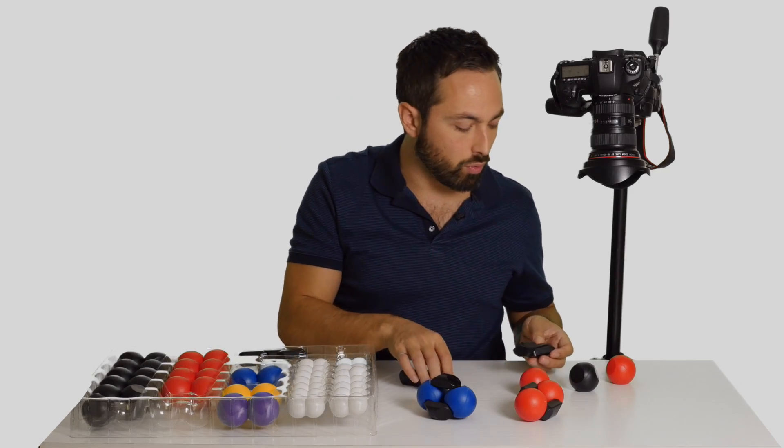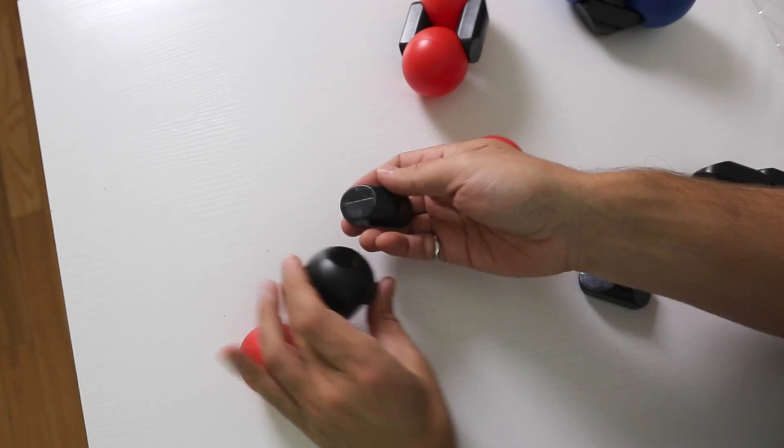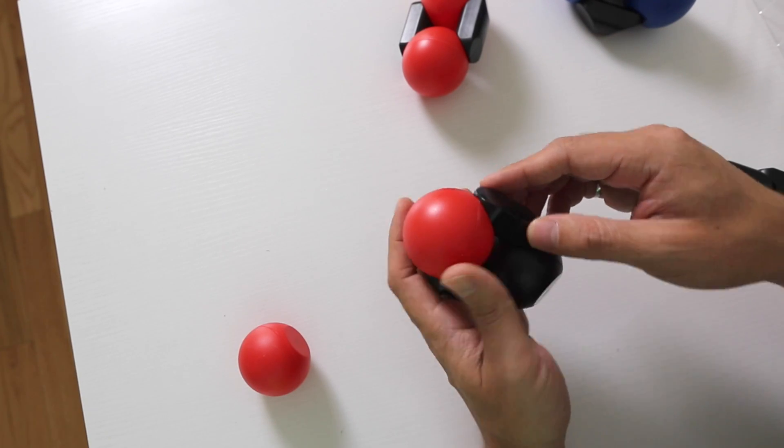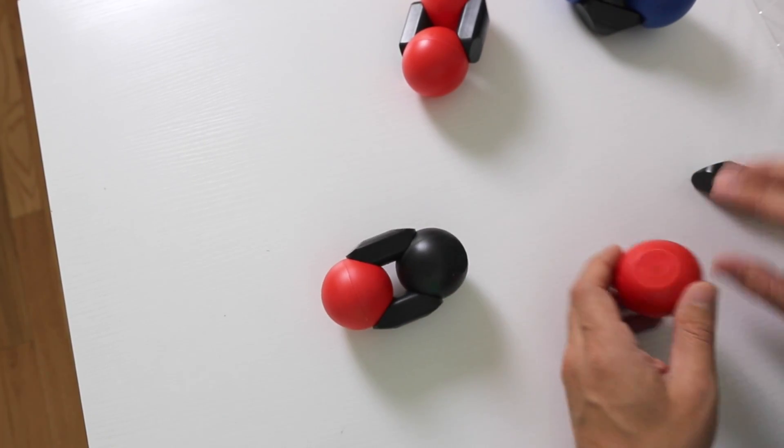So I'm going to take two double bonded pieces, again using the large flat sides to connect up two surfaces on the carbon and the two on the oxygen.